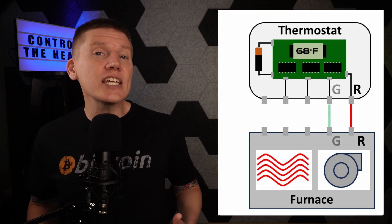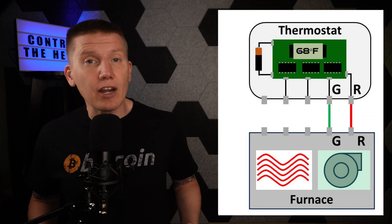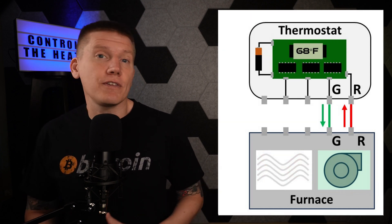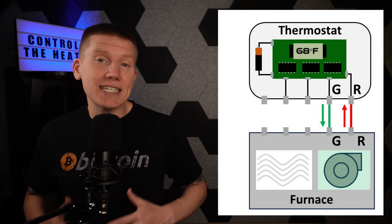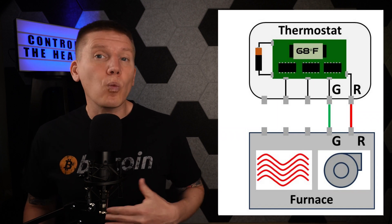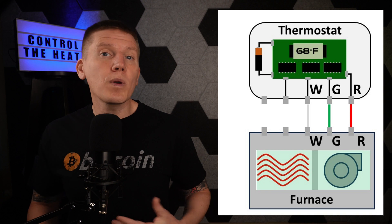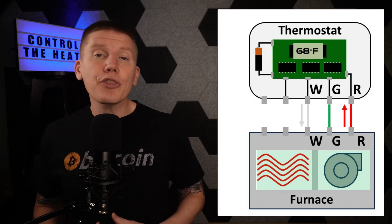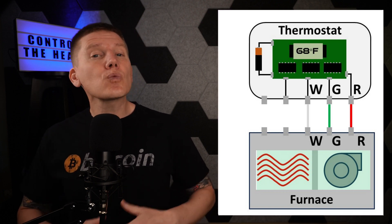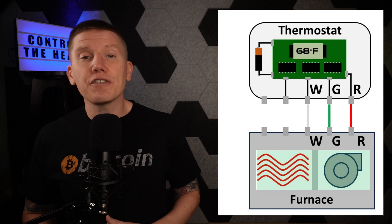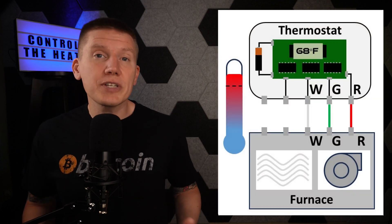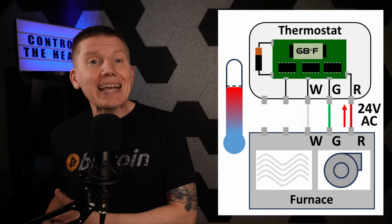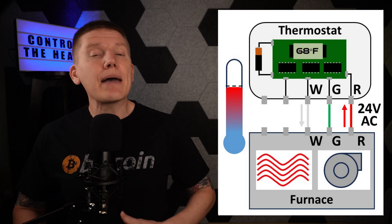The next wire is the G or green wire, which controls the fan in a forced-air furnace. When the thermostat sends 24 volts down the G wire, the furnace will power up the fan without turning on the heating part — running in fan-only mode. The W or white wire controls the heating part of the furnace. When power is sent down the W wire, the furnace goes through its startup sequence, turns the fan on when ready, and provides heat to the house. When the thermostat stops sending voltage down the W wire, the furnace stops providing heat, goes through its shutdown sequence, and turns the fan off. Under normal operation, when the room temperature drops below the set point, the thermostat sends 24 volts from the R wire back through the W wire, and the furnace starts up and blows heat around the house.